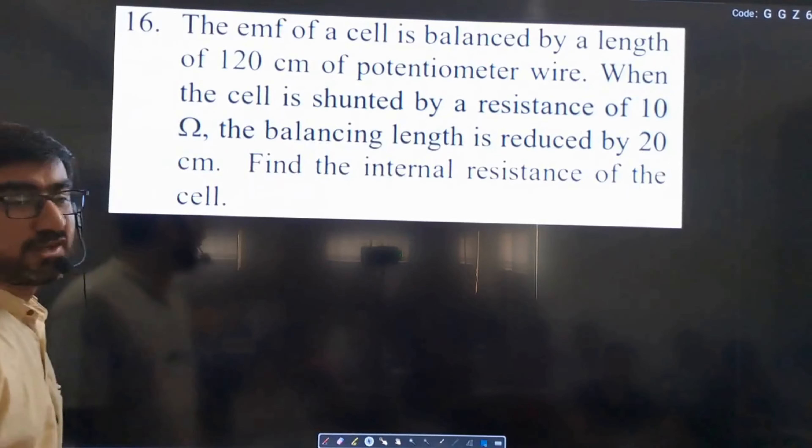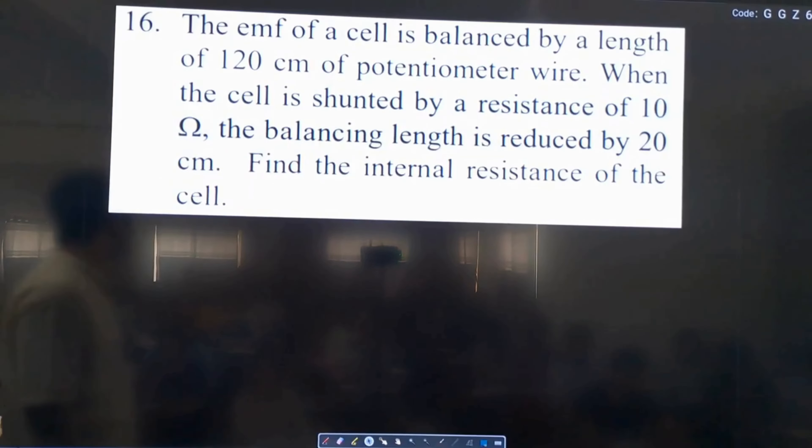The EMF of a cell is balanced by a length of 120 cm of potentiometer wire. When the cell is shunted by a resistance of 10 ohm, the balancing length is reduced by 20 cm. Find the internal resistance of the cell.